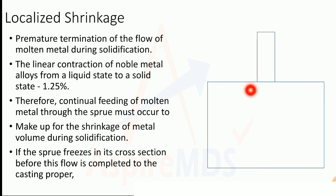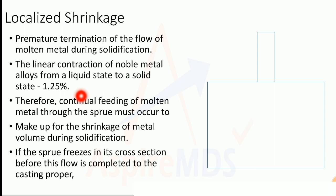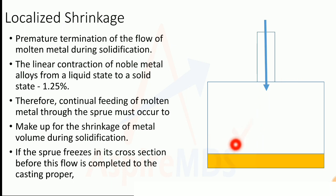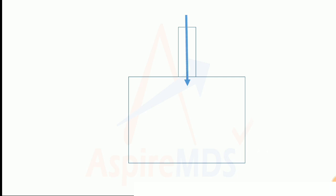One important thing to remember is that there is a linear contraction of noble metal of at least 1.25%. This means that when metal goes from liquid state to solid state, there is a contraction of 1.25%. So from the liquid stage when it enters, to the solid stage, a contraction takes place — this is the linear contraction seen in noble metals.